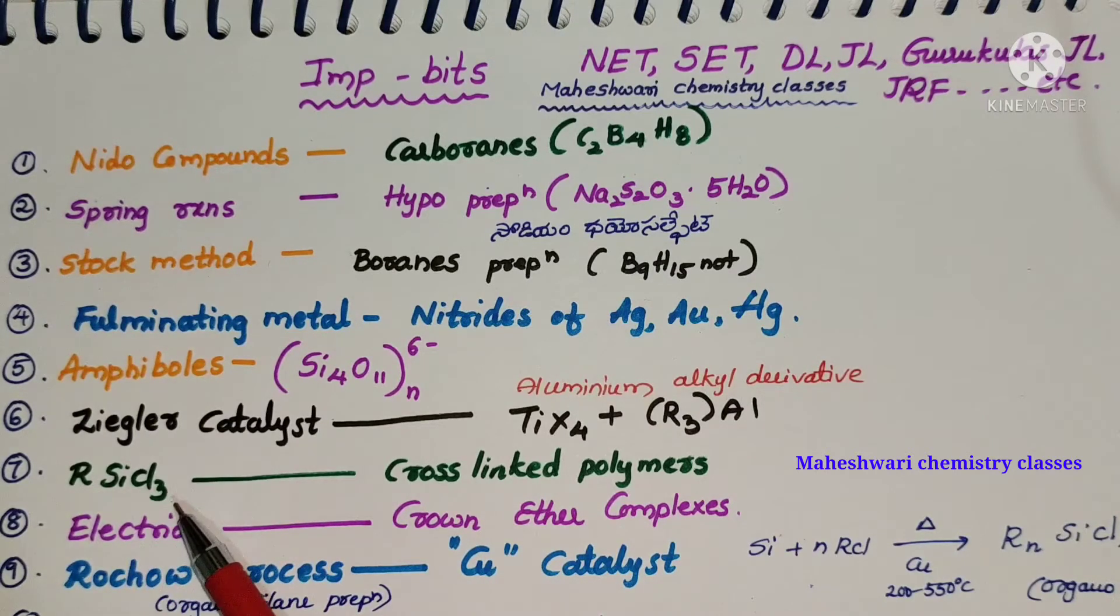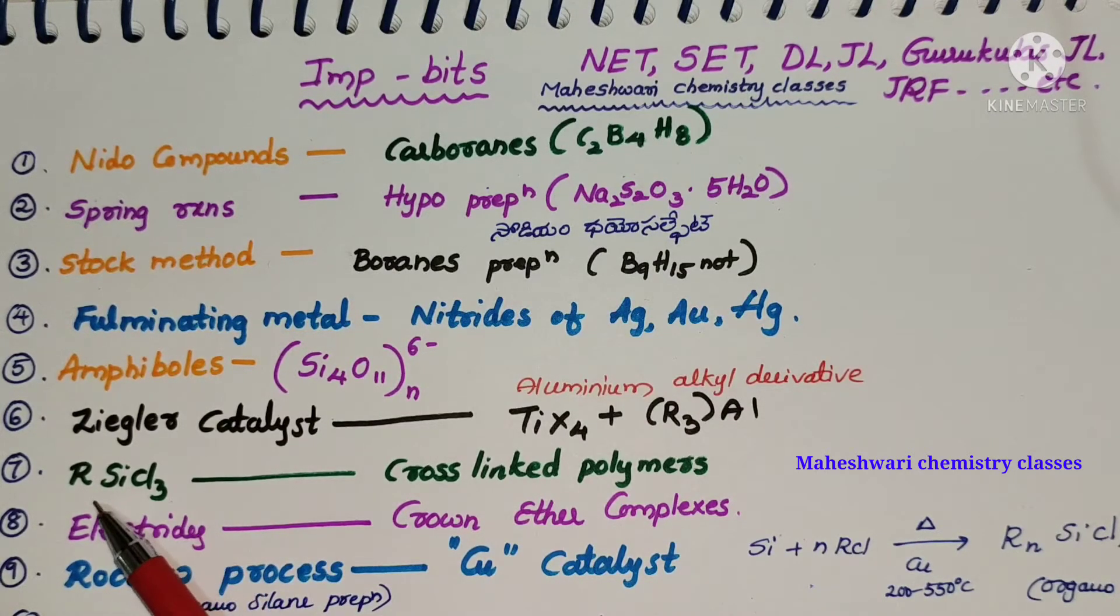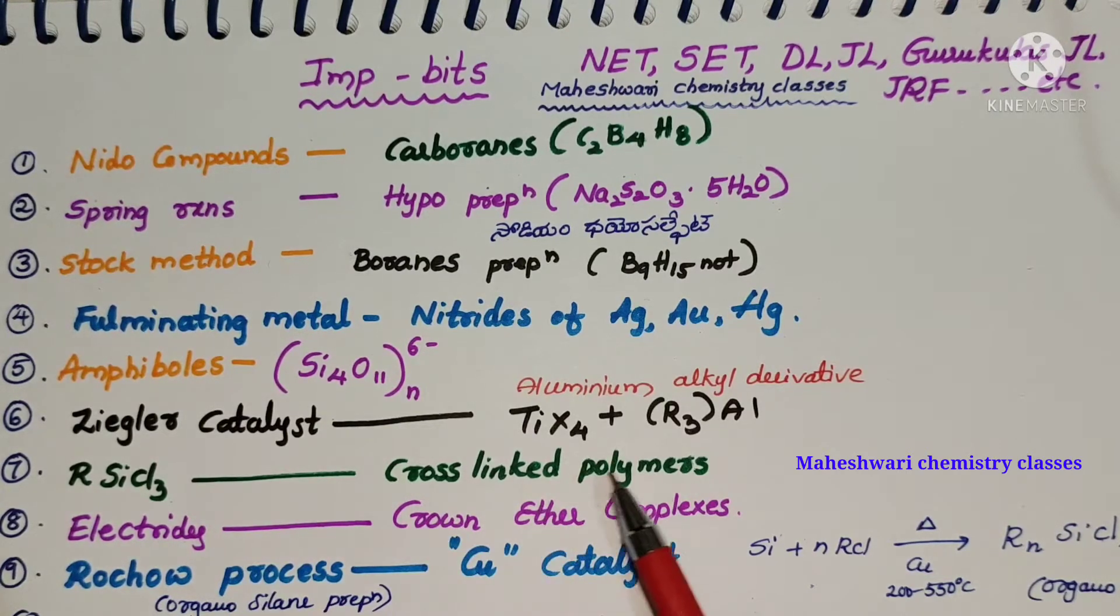Alkyl C is trichloride, R-SiCl3 is cross-linked polymer.